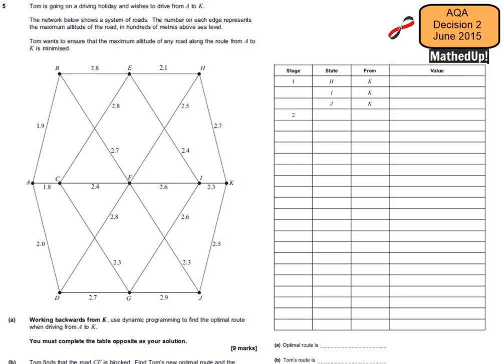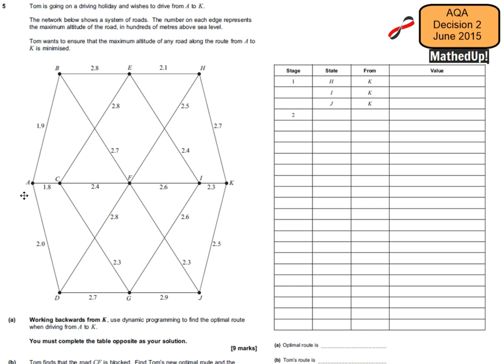This is question 5 from the AQA Decision 2 June 2015 exam paper. In this problem, Tom is going on a driving holiday and should travel from A to K. The network shows a system of roads. The number on each edge represents the maximum altitude of the road in hundreds of metres above sea level. Tom wants to ensure that the maximum altitude of any road along the route from A to K is minimised, so he wants any route he chooses to contain the lowest possible highest altitude.